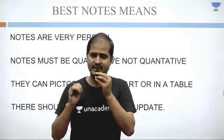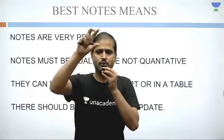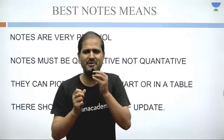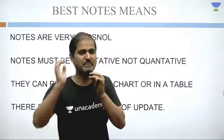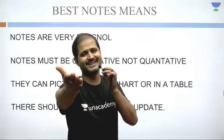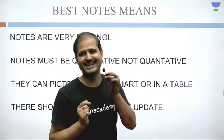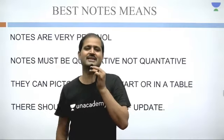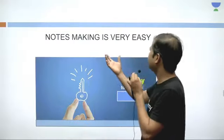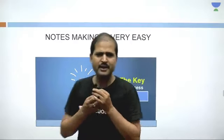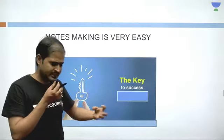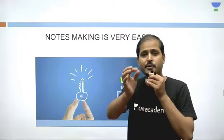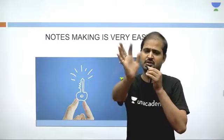एक और point — notes में update का chance होना चाहिए। जब भी notes बनाएं, थोड़ी सी जगह आगे-पीछे छोड़ें। एक page लें, उसे lines खींचकर 4 boxes में divide करें। एक box में limited लिखें, थोड़ी जगह छोड़ें ताकि update करना पड़े तो उस box में कर सकें। फिर दूसरे box में लिखें, वहाँ भी limited information और जगह छोड़ें। तीसरे box में भी ऐसे ही। क्योंकि आप किताबें पढ़ेंगे, teacher से सीखेंगे, seniors से बात करेंगे, foreign authors की books पढ़ेंगे — नई जानकारी मिलती रहेगी और आप update करते रहेंगे।